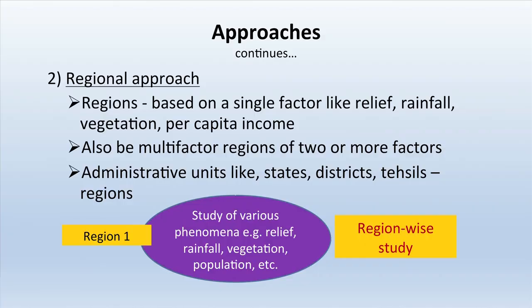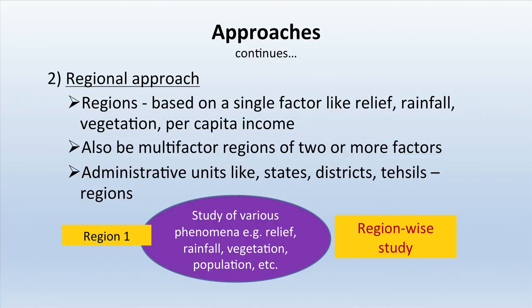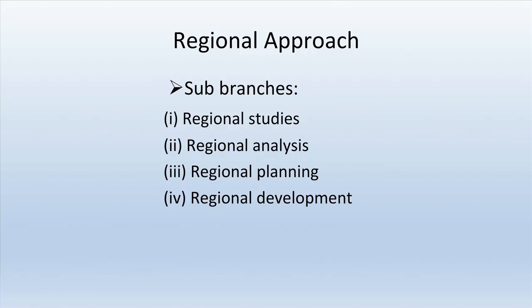The sub-branches of systematic geography are physical geography, biogeography including environmental geography, human geography, and geographical methods and techniques. In the regional approach, we define regions and then study approaches according to those regions. Regions can be based on a single factor like relief, rainfall, vegetation, or per capita income. They can also be multi-factor regions, or administrative units like states and districts. Sub-branches of regional approach include regional studies, regional analysis, regional planning, and regional development.